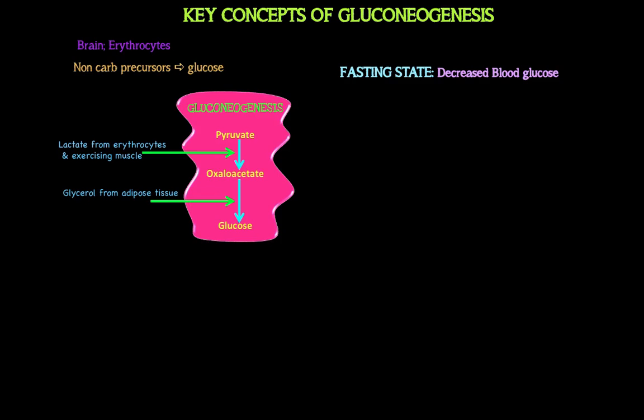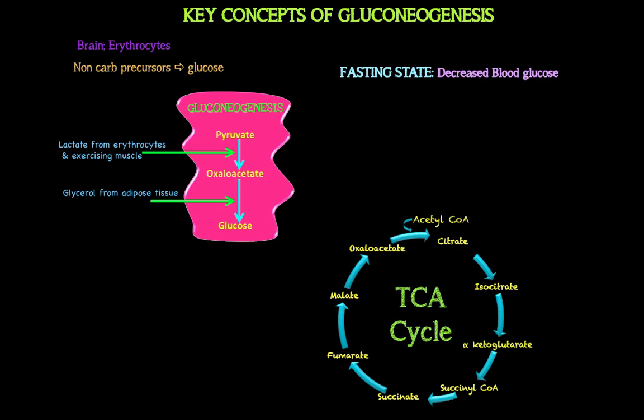The second precursor is glycerol. You get glycerol from adipose tissue. What is stored in adipose tissue? Fat — stored as triacylglycerols. When you metabolize triacylglycerols, you get two things: glycerol and fatty acids. The glycerol is used to make glucose, making it a glucogenic precursor.